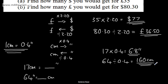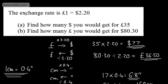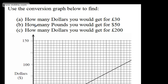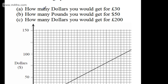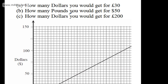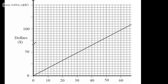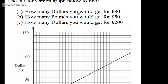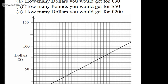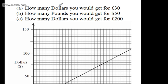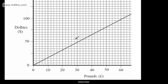So all we're doing is converting back and forth. Let's move on and look at another question. This time we've got a graph. It says use the conversion graph below to find: how many dollars you would get for £30, how many pounds you would get for $50, and how many dollars you would get for £200. Here's our conversion chart — we've got pounds along the bottom and dollars on the side. This is going to be an estimate. We want to find £30 and work out how many dollars we're going to have.